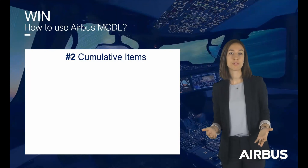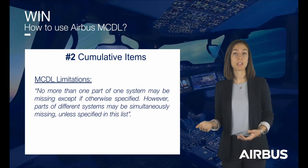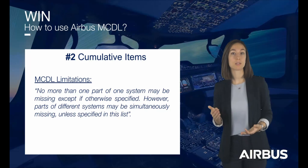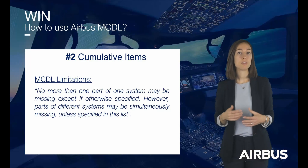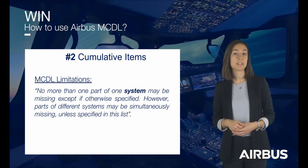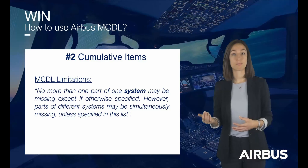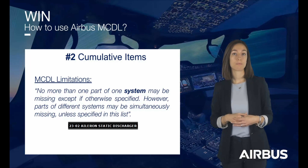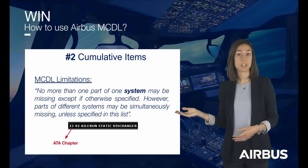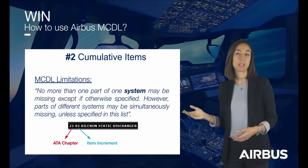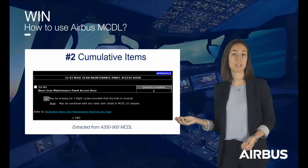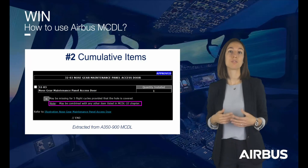The second important rule to know is about cumulative items. As referred in the limitations section of the MCDL, no more than one part of one system may be missing, except if otherwise specified. However, parts of different systems may be simultaneously missing unless otherwise specified in this list. The word 'system' in the MCDL refers to the ATA chapter — for example, ATA 23, Communications. In the MCDL, the item ID is divided as follows: digits 1 and 2 correspond to the ATA chapter, and digits 3 and 4 correspond to the item increment. This is one example of an MCDL item that authorizes the combination with another item that belongs to the same ATA chapter.